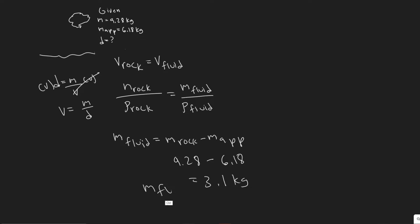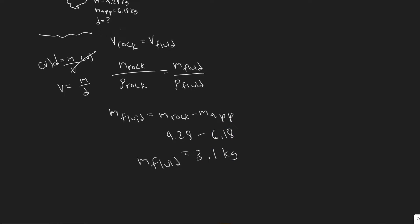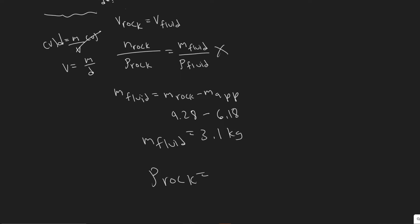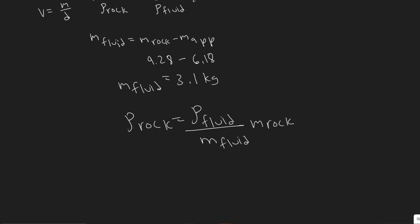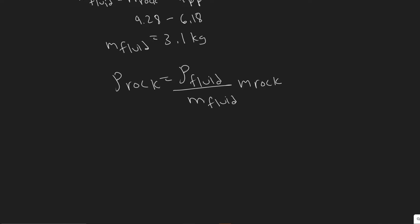Now we have the mass of the fluid, so we plug it back in. Solving for rho of the rock — the density of the rock — if we multiply both sides and rearrange, it's going to be equal to the density of the fluid divided by the mass of the fluid, then multiplied by the mass of the rock.